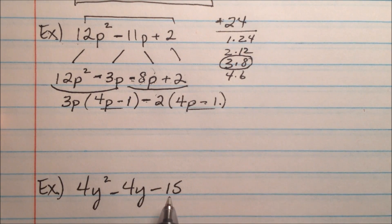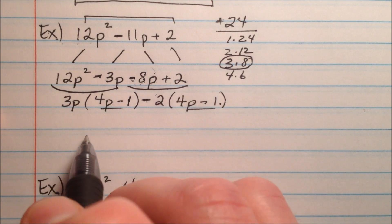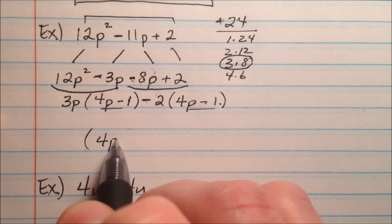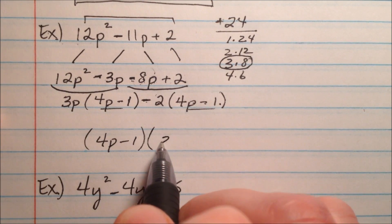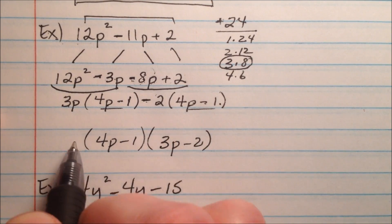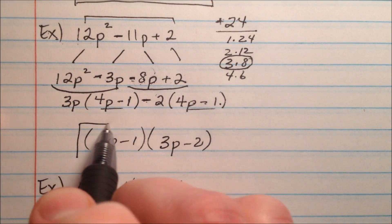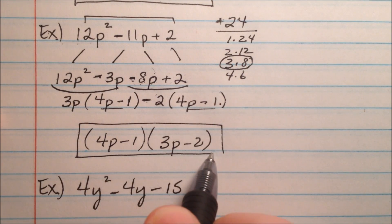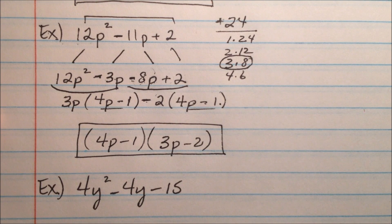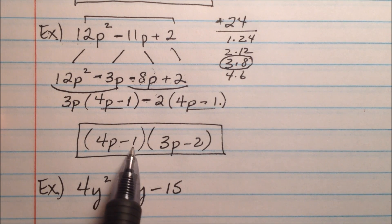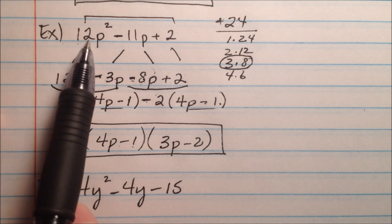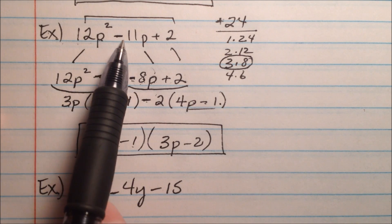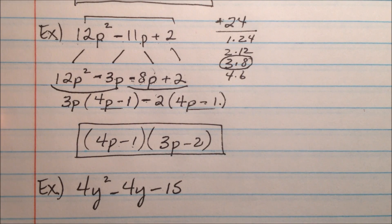Both groups now share 4p − 1, so we combine them. The 3p and −2 were the greatest common factors pulled from each group. The final factored form is (4p − 1)(3p − 2), and those are the two binomials that multiply to make 12p² − 11p + 2.